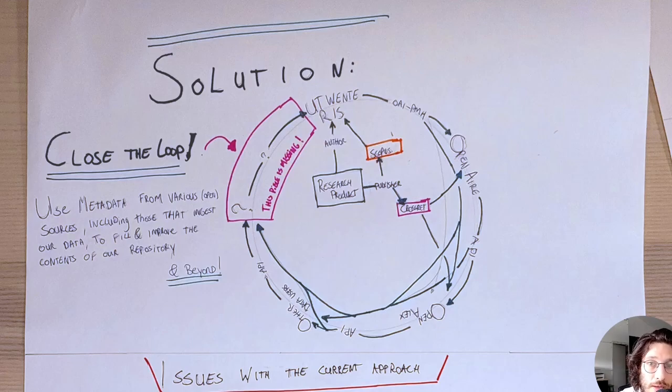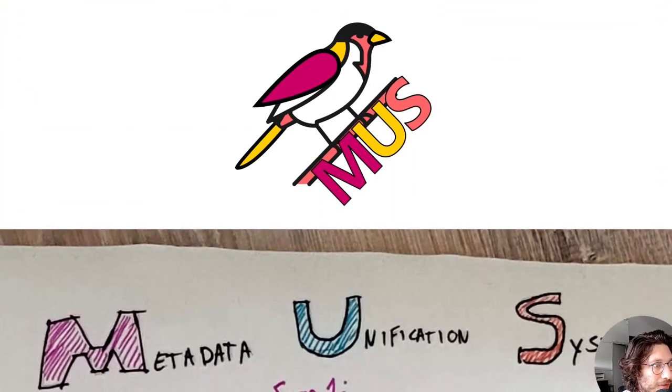So, what do we need then? We need some way to ingest all this data, compare it with our own, and do that in a way that also the less technical staff is able to do this. So, what I created is MUS, as I said. MUS stands for Metadata Unification System, which is the tool that I've built in collaboration with our library staff to produce something that can be used for this purpose.